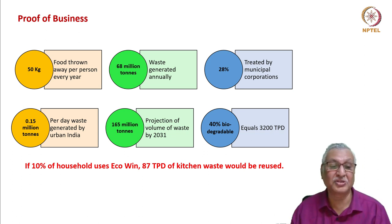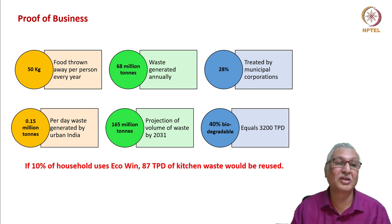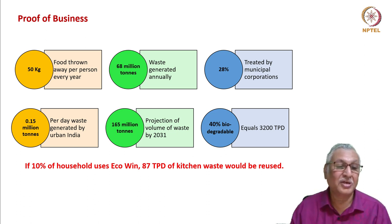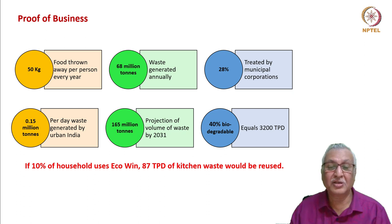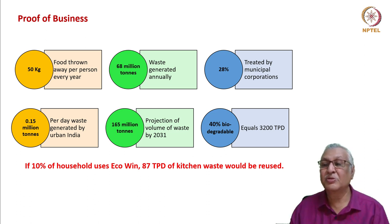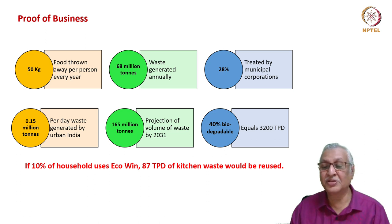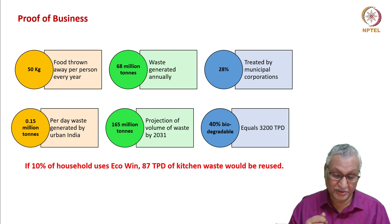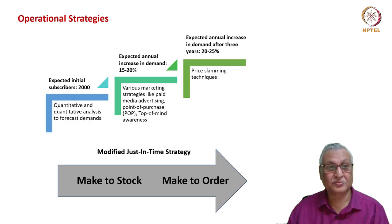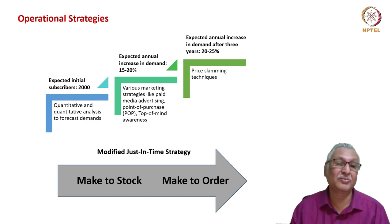User experience interviews showed many were excited about the one-touch process and affordable smart technology. Proof of business surveys found: 50 kg of food is thrown away per person per year; urban India generates 0.15 million tons per day; 68 million tons of waste generated annually; 165 million tons projected by 2031; only 28 percent can be treated by municipal corporations; 40 percent is biodegradable — equal to 3,200 tonnes per day. If 10 percent of households use ecovin, 87 tonnes per day of kitchen waste would be reused.